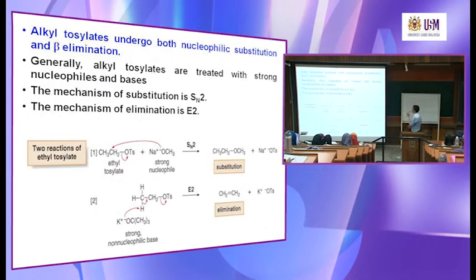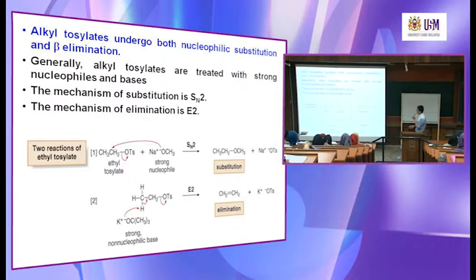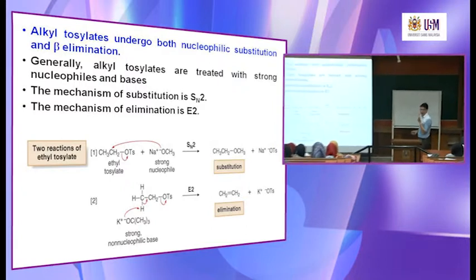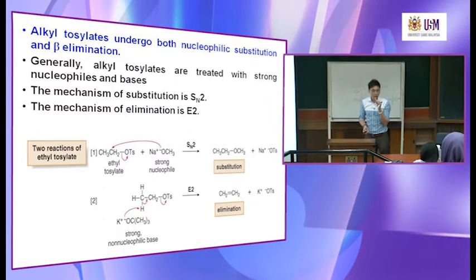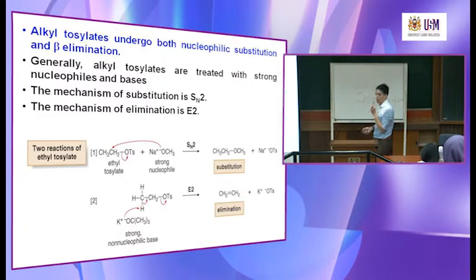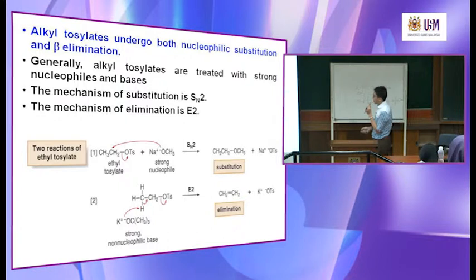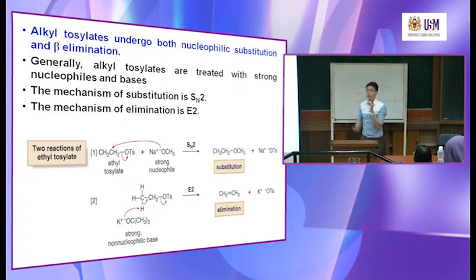Alkyl tosylate undergoes both nucleophilic substitution and beta elimination. Generally, alkyl tosylate is treated with a strong nucleophile or base. After you generate the ethyl tosylate, you react it with either a strong nucleophile — in this case methoxide (OCH₃⁻), which is a strong nucleophile. If this is a strong nucleophile, you expect it to undergo SN2 reaction.